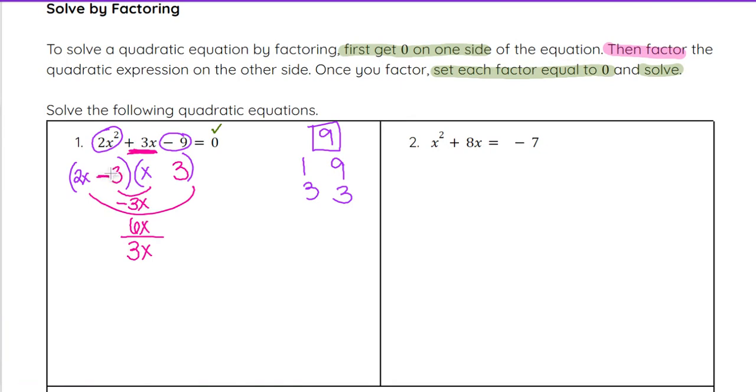We need a negative 3 on this one, because negative 3 times x will get us to that negative 3x for the inner product, which will combine with 2x times 3, which is 6x, to give us that 3x. So, this will be a positive, and the other one is negative, and it still equals 0.